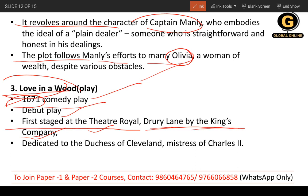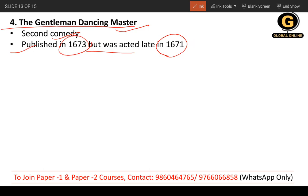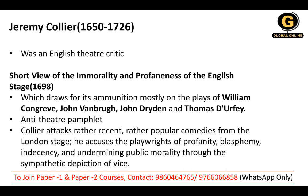Love in a Wood was dedicated to the Duchess of Cleveland, who was the mistress of Charles II. The fourth work, The Gentleman Dancing Master, is a second comedy published in 1673, but was actually performed late in 1671.